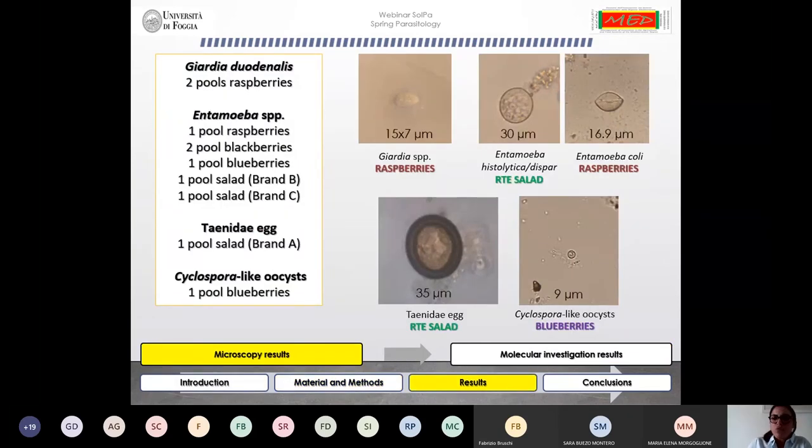First of all, we identified Cyclospora-like oocysts in a blueberry sample. Also, we identified a Taeniid egg in a ready-to-eat salad sample. In addition, we identified Giardia and Entamoeba in both berries and ready-to-eat salad samples.